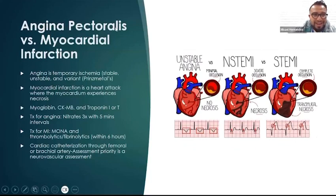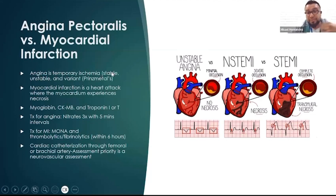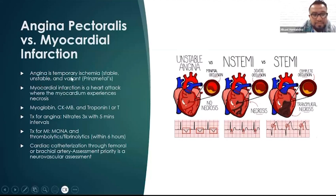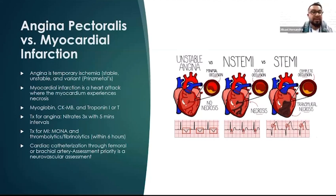We need to differentiate between angina pectoris and MI. Angina is temporary ischemia. We have different types of angina: stable, which is predictable, and unstable, which is not predictable. Both stable and unstable are associated with atherosclerotic plaque or coronary artery disease. There is also another type called Variant or Prinzmetal's angina, caused by vasospasms. That one can happen while you're sitting down relaxing and the artery will just start spasming, causing angina.